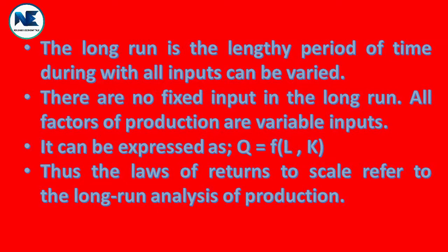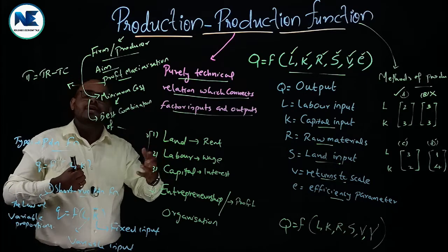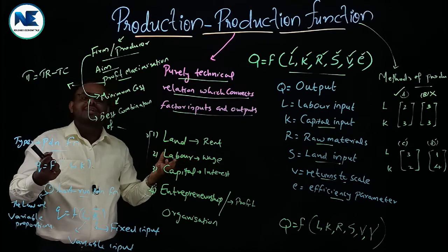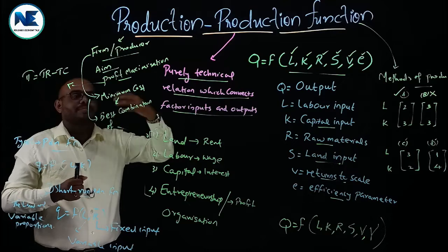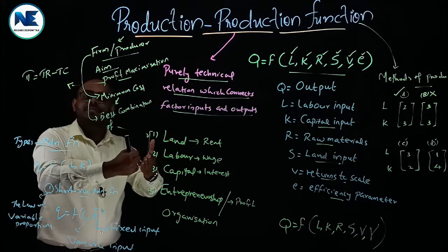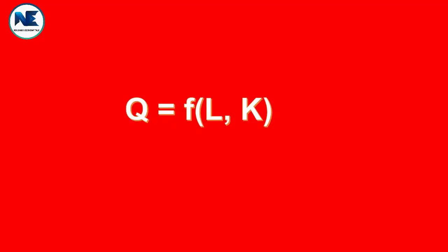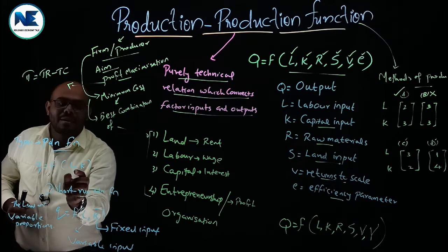The second type is the long-run production function. In the long run, the time period is long, in which a firm can increase their output by changing all the factors of production. There is no distinction between fixed input and variable input — all factors of production are variable, because the firm can expand their plant or install sophisticated technology or machinery. So Q = f(L, K) where both labor L and capital K are variable inputs.